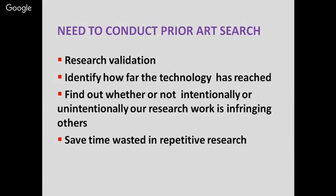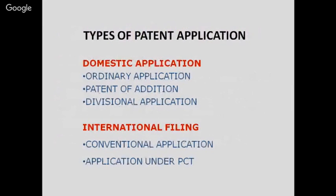We need to find out whether our research work is intentionally or unintentionally infringing on others' claims; the claim should not be similar, otherwise it is revocable, and it saves time wasted in repetitive research. Types of patent applications can be domestic — in India these are ordinary application, patent of addition, and divisional application — or for international filing, a conventional application or application under PCT.